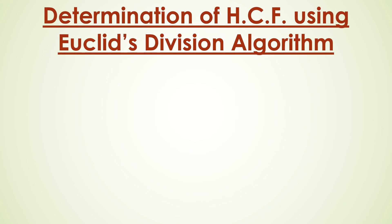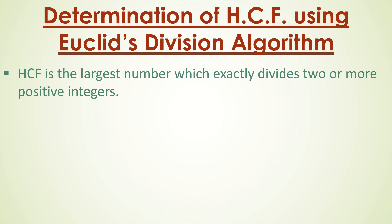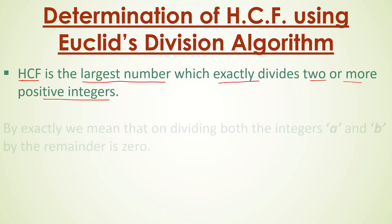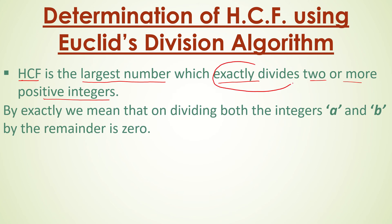Let us see the determination of HCF — that means highest common factor or greatest common integer — using Euclid's division algorithm. HCF is that largest number which exactly divides two or more positive integers. The meaning of exactly divides is that on dividing the given integers A and B, the remainder we get will be 0.